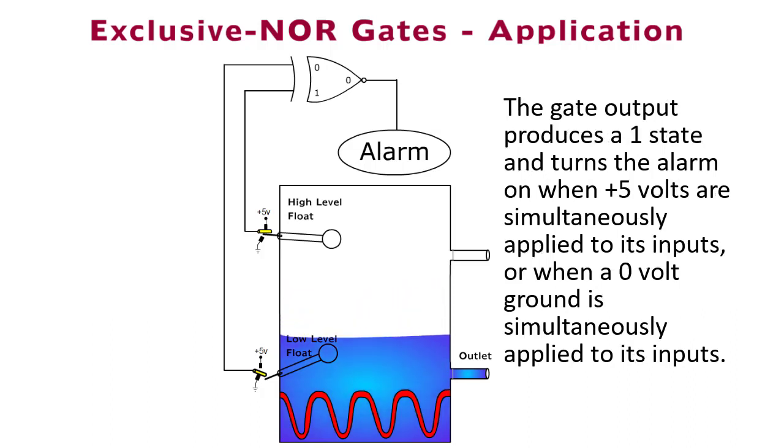The gate output produces a 1 state and turns the alarm on when positive 5 volts are simultaneously applied to its inputs, or when a 0-volt ground is simultaneously applied to its inputs.